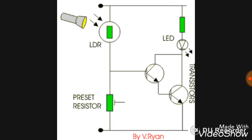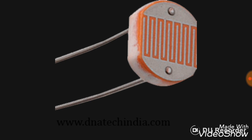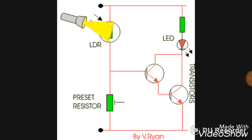Next is LDR — light dependent resistor. This is the image of LDR. It is a linear device, meaning if the intensity of light increases, the resistance of this component decreases. It can be used to sense light — in daylight it shows high resistance, meaning the output can be 0.